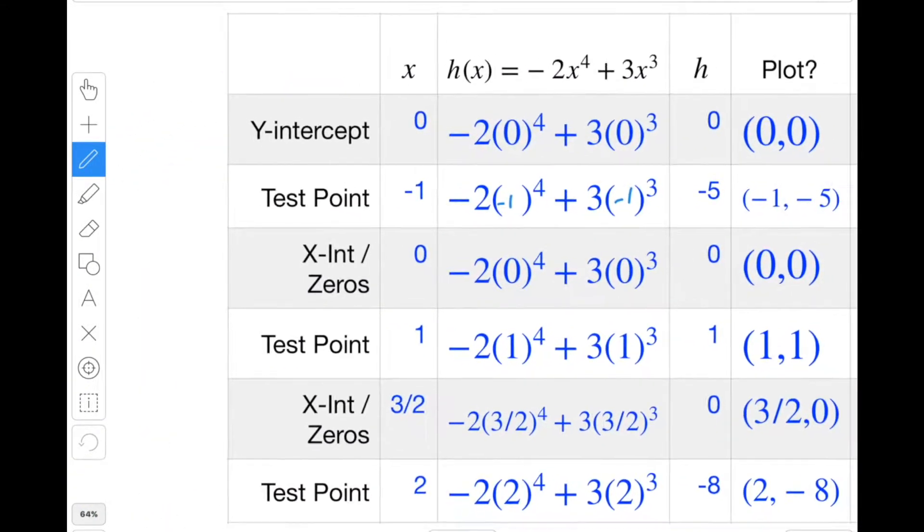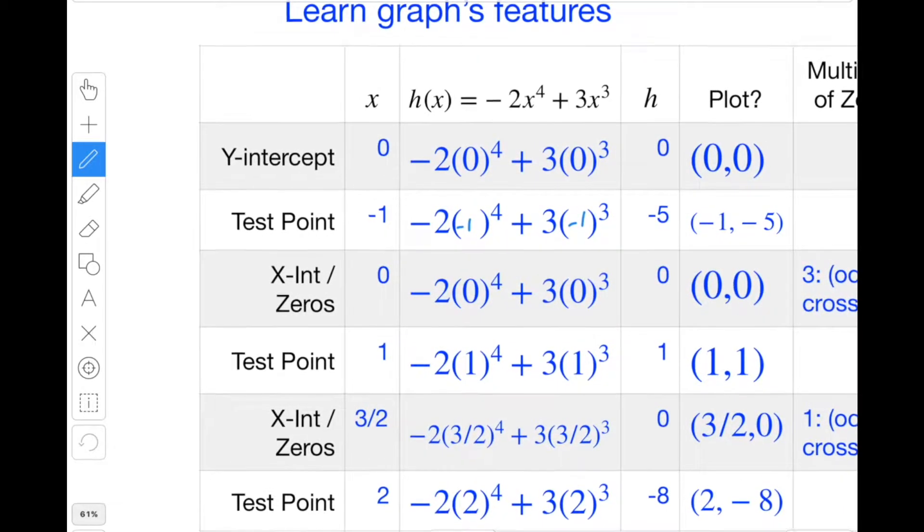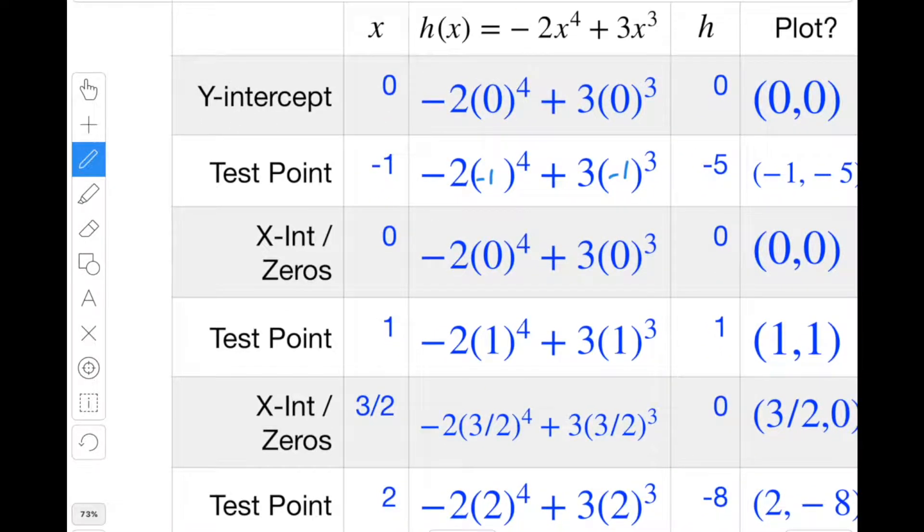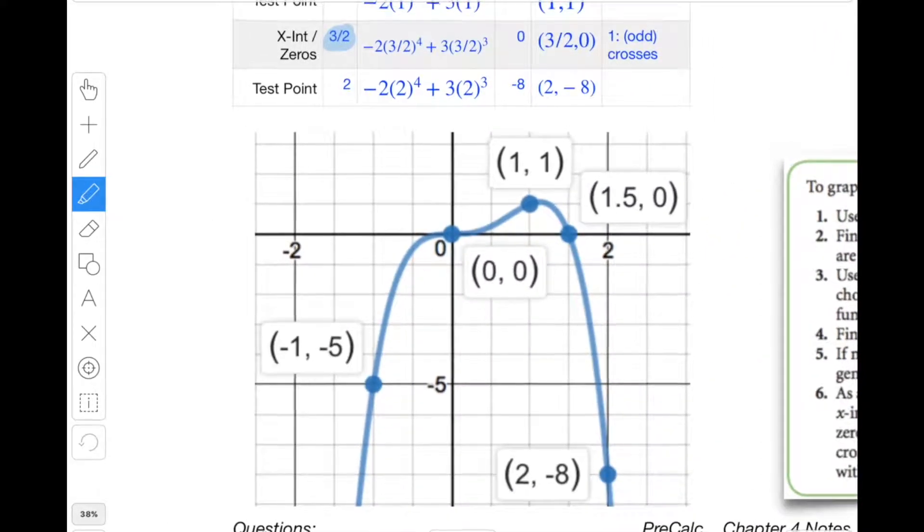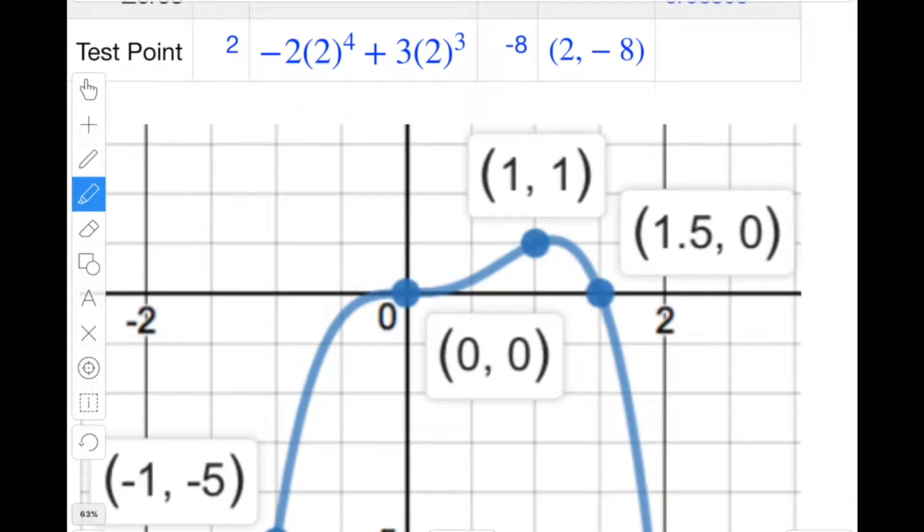And so you can see here we take those zeros that we just found, we're going to plot them. Here's the zero, here's the other zero. We're going to put them on our table, and then we're going to surround them with test points on either side.